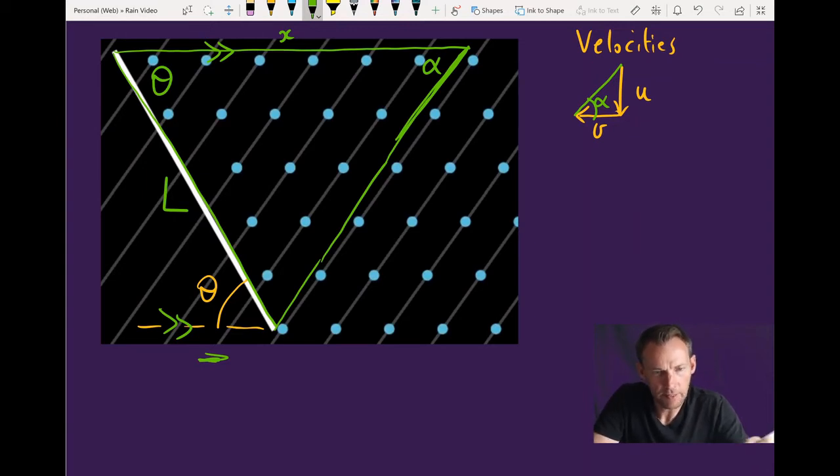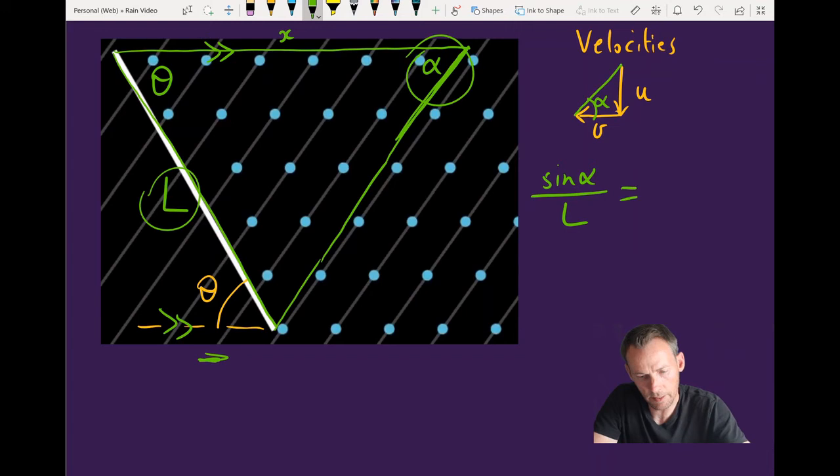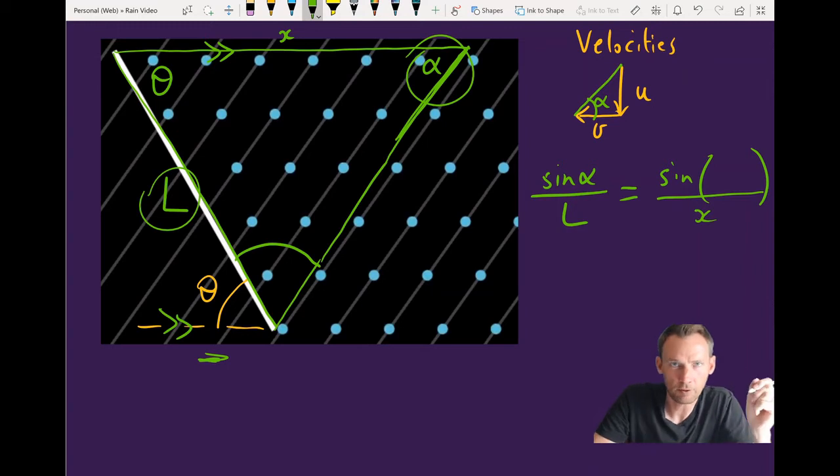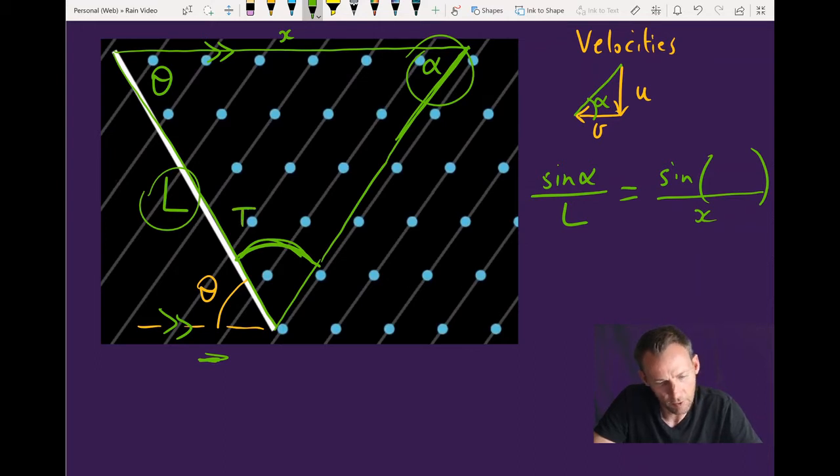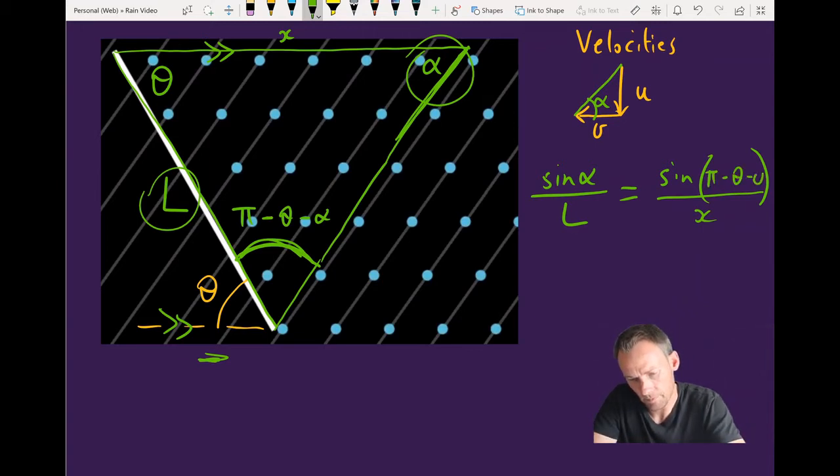Using the sine rule, we can write that the sine of alpha over L, so I'm using this angle and the opposite side, is the sine of this angle right here, and I'll get to that in just a second, divided by x. And it's that x that we want to solve for. Now this angle down here on the bottom, we can work out just using the fact that all angles in a triangle have to add up to 180 degrees or pi radians. I prefer to work in radians, so therefore this angle is pi minus theta minus alpha.